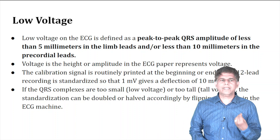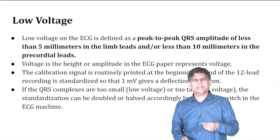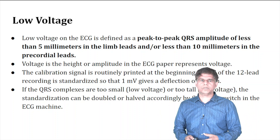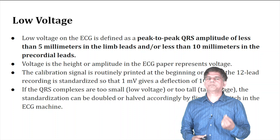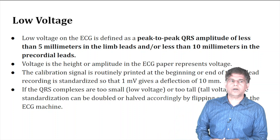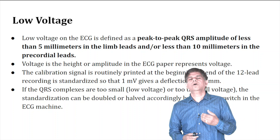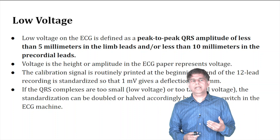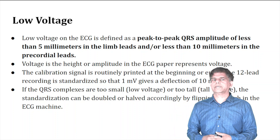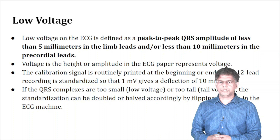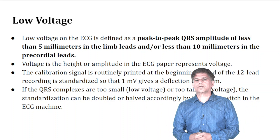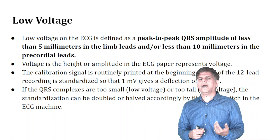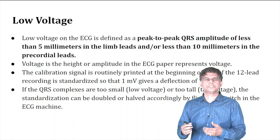When you look at the EKG, how do you define low voltage? The first thing I always do is look from far away and assess the voltage. Low voltage is defined as a peak-to-peak QRS amplitude of less than 5 millimeters in the limb leads, or less than 10 millimeters in the precordial leads. The voltage refers to the height of the amplitude when you look at the EKG.